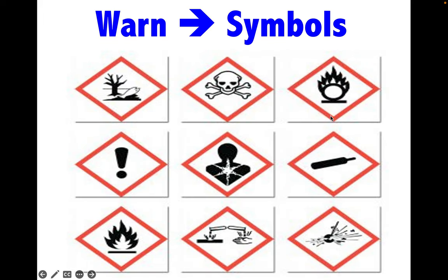You can also warn others about potential hazards from chemicals using these symbols, which you need to know the meaning of each. For example, the chemicals may be: environmentally toxic, dangerous to health, reactive/oxidizing, irritant, respiratory toxic, corrosive, flammable, and explosive.